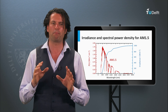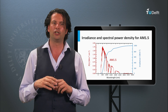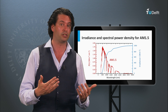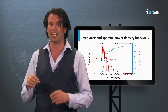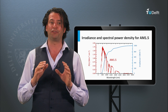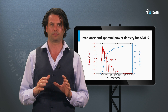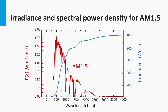As the AM 1.5 spectrum is very important to the solar community, I will use it to demonstrate the relation between the spectral power density function, the irradiance, the spectral photon flux, and the photon flux. The spectral power density of the AM 1.5 spectrum is plotted here. As discussed earlier, the irradiance is the integration of the spectral power density function over lambda, meaning the area below the AM 1.5 spectrum corresponds to the irradiance. The blue line shows the integration from 0 up to lambda, and the area equals 1000 watts per square meter, as expected for the AM 1.5 spectrum.